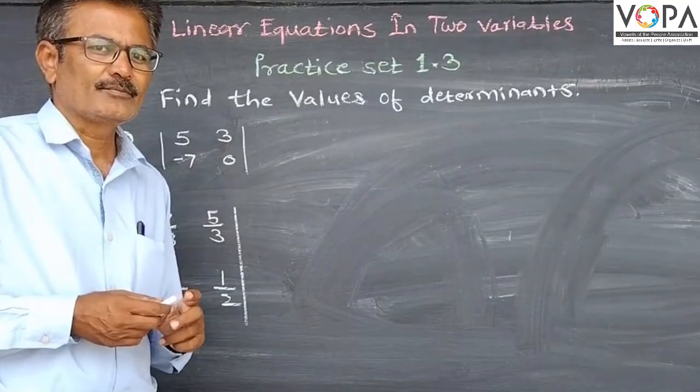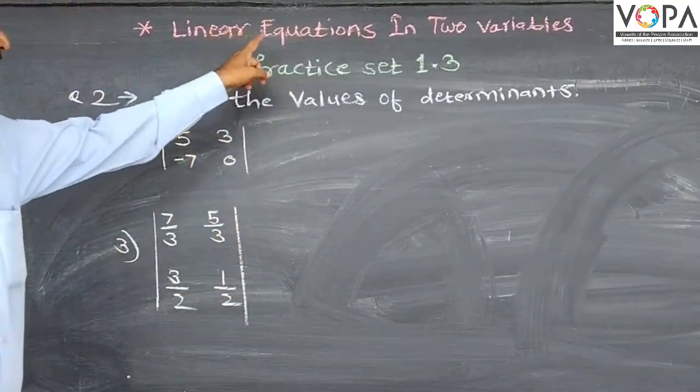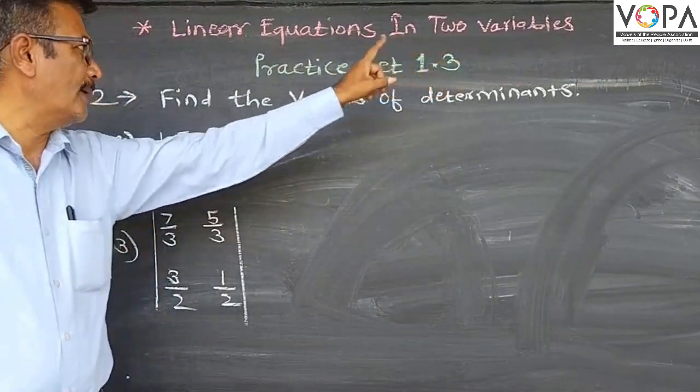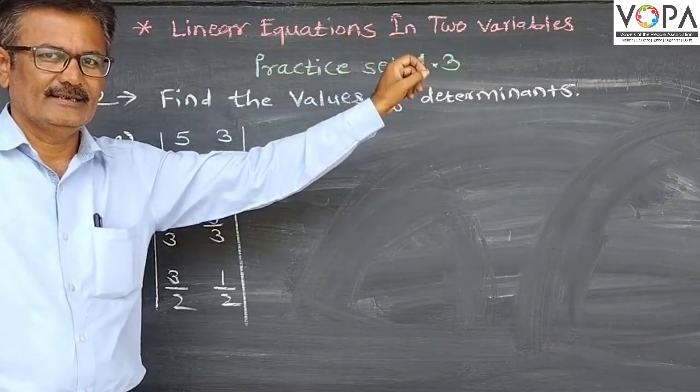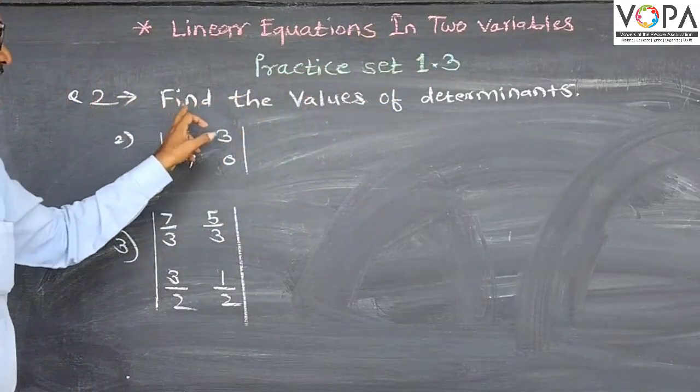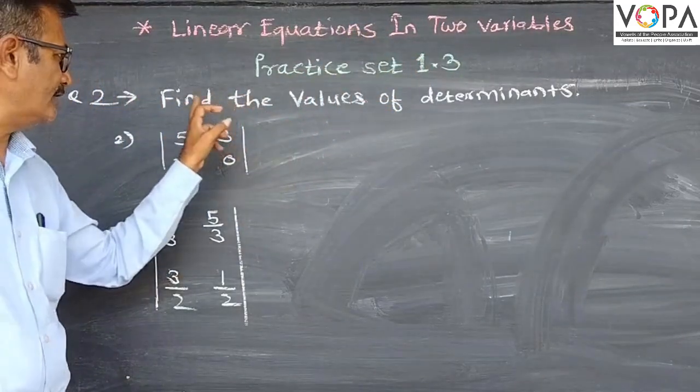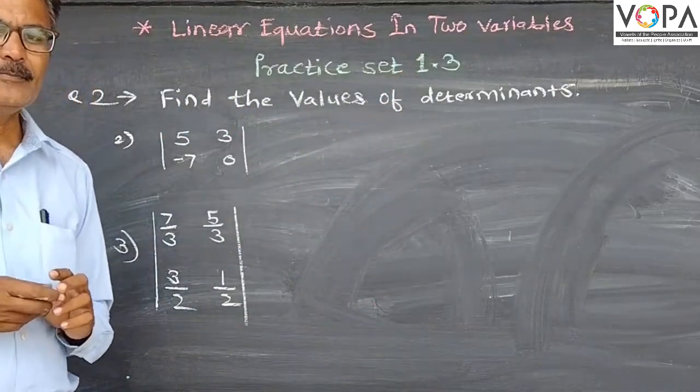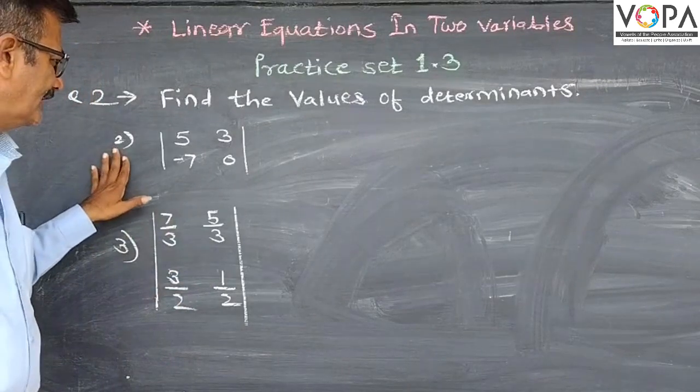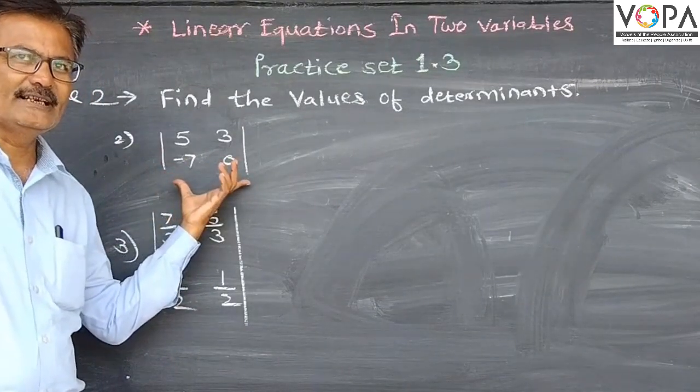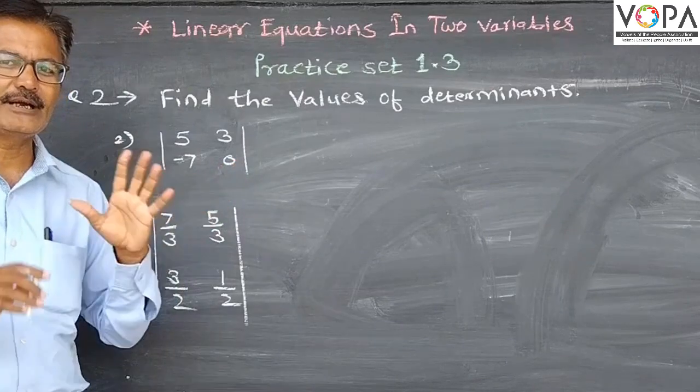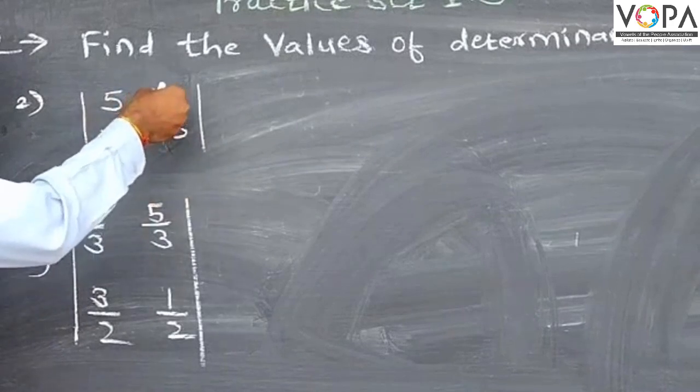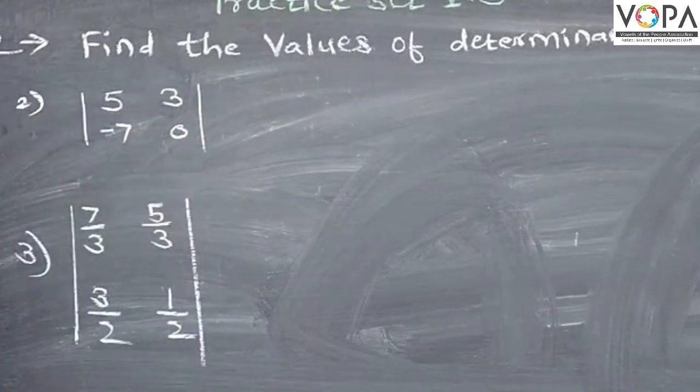Linear equations in two variables, chapter 1.3. I have a question: find the values of the determinant. I have two rows and columns, a 2 by 2 matrix.